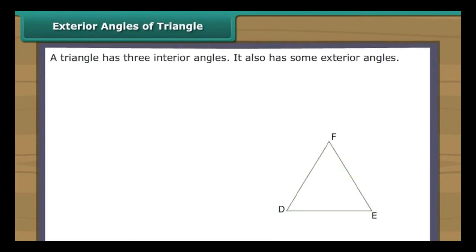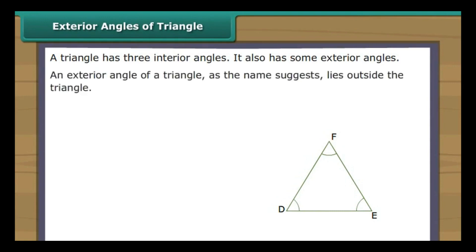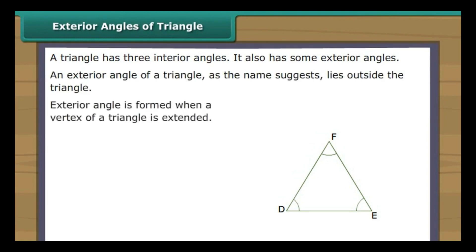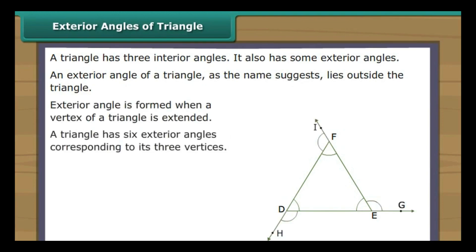A triangle has three interior angles and also exterior angles. An exterior angle of a triangle lies outside the triangle. An exterior angle is formed when we extend a vertex of a triangle. A triangle has six exterior angles corresponding to its three vertices.